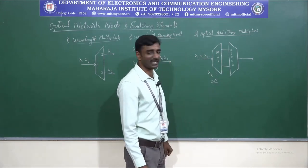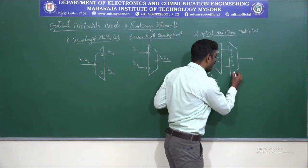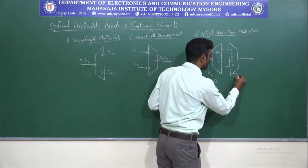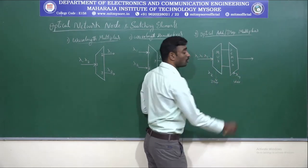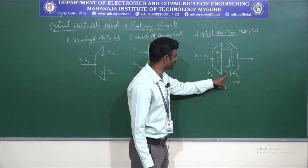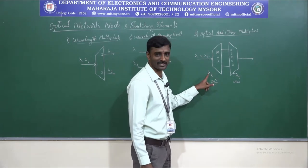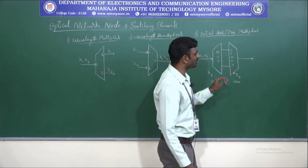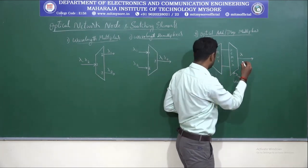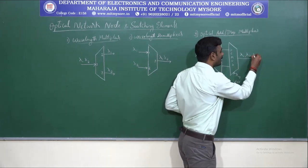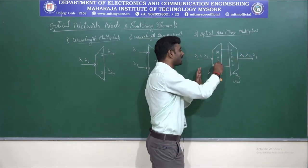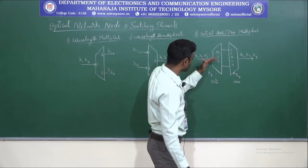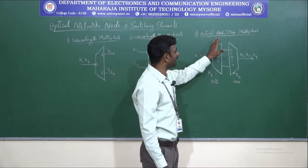At the demultiplexer, I need to add one signal. That signal will be lambda 4. So at this stage I get lambda 1 and lambda 3 from the input, and I add lambda 4 at the demultiplexer. Based on this, the output will be lambda 1, lambda 3, and lambda 4. Lambda 2 has been dropped at the multiplexer and lambda 4 is added at the demultiplexer. This is considered as an optical add or drop multiplexer.